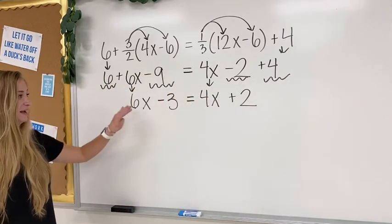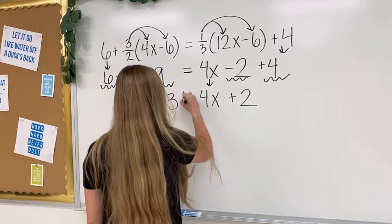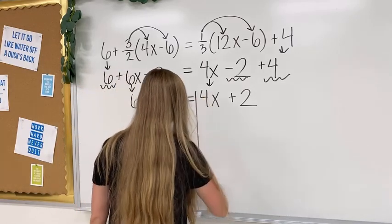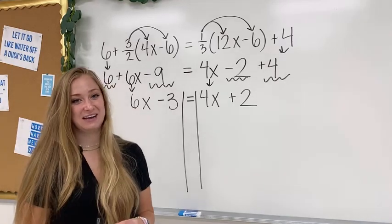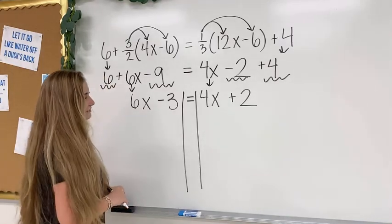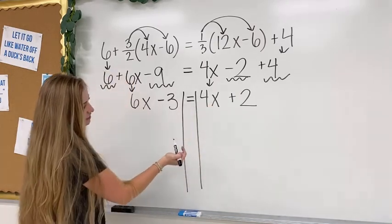Now I see that my left side is simplified and my right side is simplified, so I'm ready to start solving. But the first question I ask myself is, are my x's on all one side? Is it isolated? It's not, so I need to cancel out my x's by doing the inverse operation.